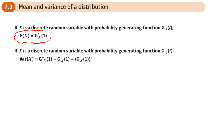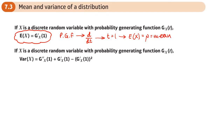If we take our probability generating function and differentiate it with respect to t — because every term is going to have a t in it — then we substitute t equal to 1, that gives us E of x, the mean. So we take our probability generating function, differentiate with respect to t, substitute in 1, and we get the mean.